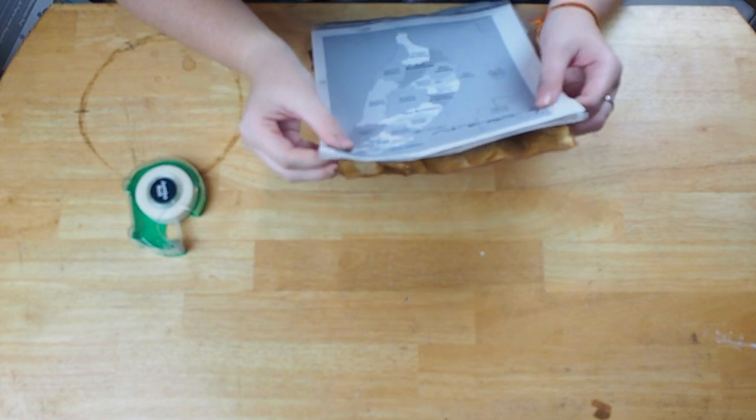The next part is to actually trace your map onto the antiqued paper using the graphite paper. To do that, sandwich the graphite paper between the antiqued paper and your map with the graphite side of the page touching the antiqued paper.